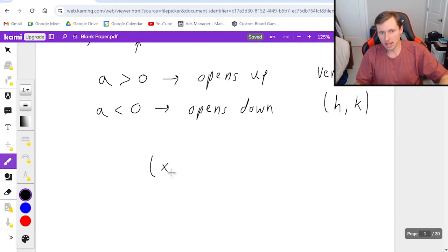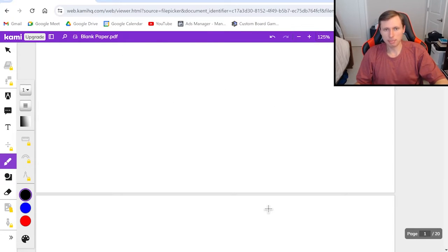So for instance, if I have x minus 2 squared plus 6, the vertex is actually at positive 2 comma 6. Always flip the sign for the x value and keep the y the same. So that's the basics.